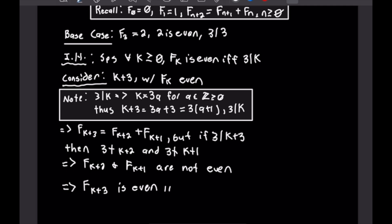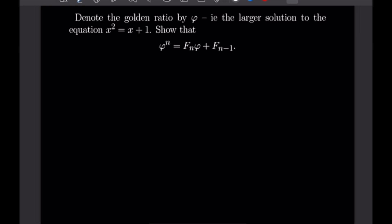That finishes off this proof. Now here we have a fun golden ratio problem. We denote the golden ratio by φ, which is the larger solution to x² = x + 1. We want to show that φⁿ = F_n · φ + F_{n−1}, where the F_n's represent the Fibonacci numbers.